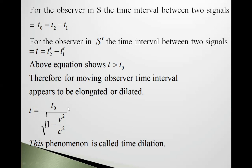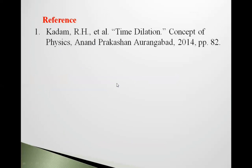This is the equation for time: T equals T₀ upon square root of 1 minus V² upon c². This phenomenon is called time dilation. References I used for preparation of this presentation. Thank you.